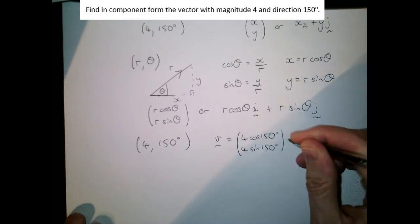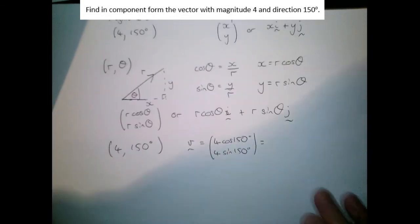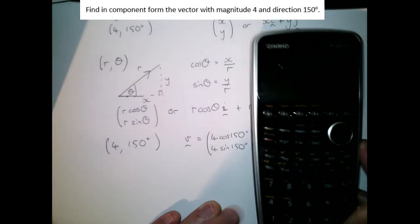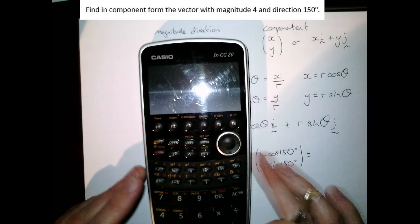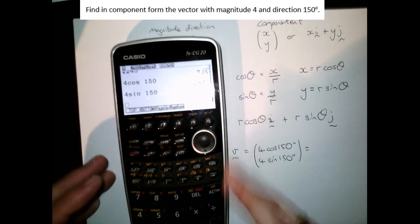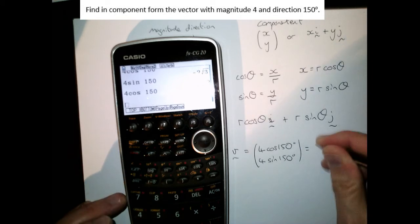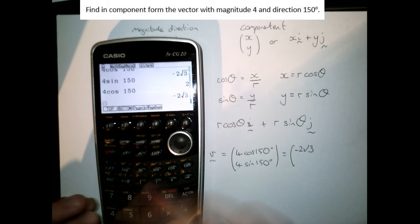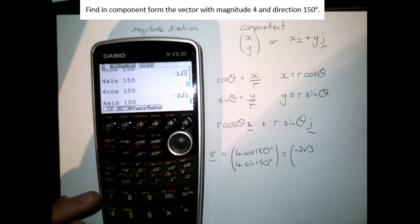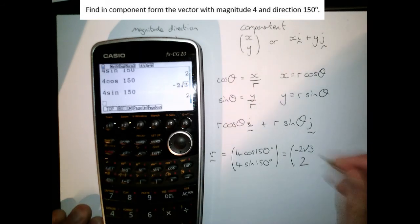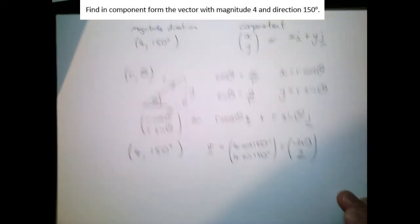If we stick that into the calculator, where's the calculator then, we're going to do here, oh that's going to be too bright there. Oh you can see I've actually already done these: 4 cos 150 gives me minus 2 root 3, and 4 sine 150, sine 150 is a half, four times that gives me 2. There is my vector.